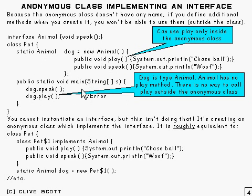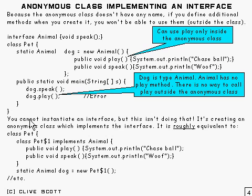When I said it's not accessible outside, there are things you can do — there's something called reflection which will enable you to get all sorts of things, but that's an API used for things like debuggers which can do all sorts of things. You can't normally access it like that. What we're saying here is you cannot instantiate — this thing is not instantiating that interface. What it's doing is making a subclass of Object which implements that interface.